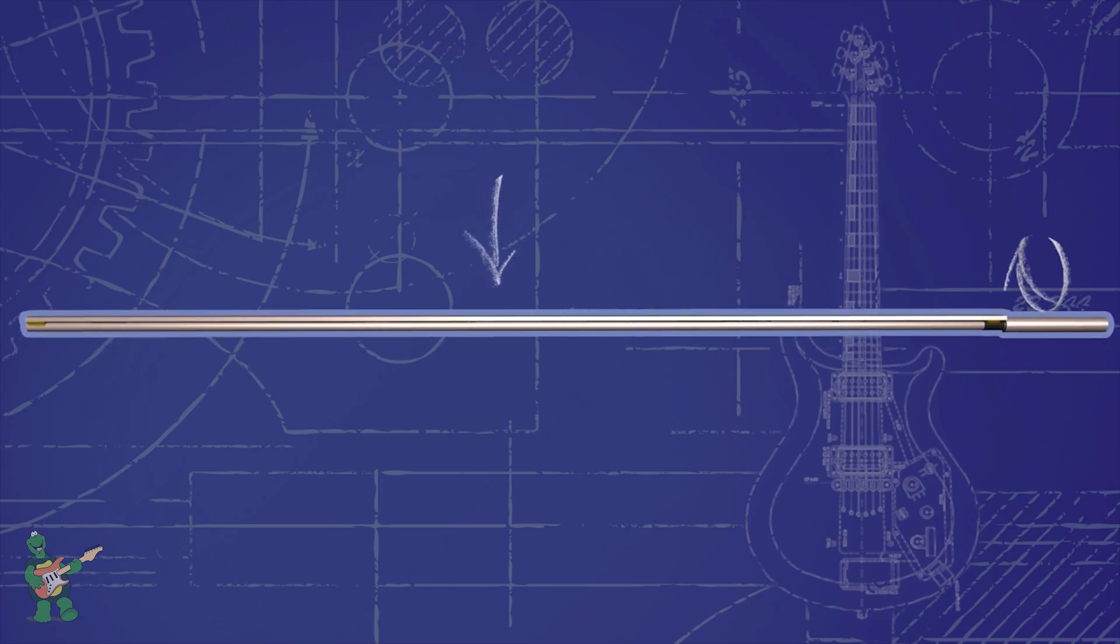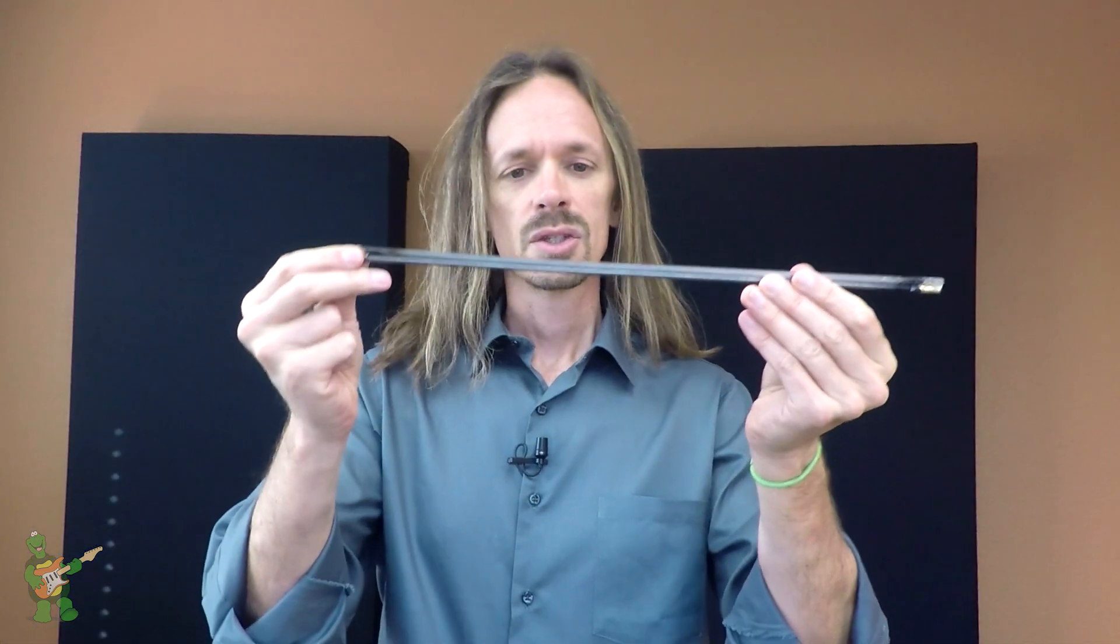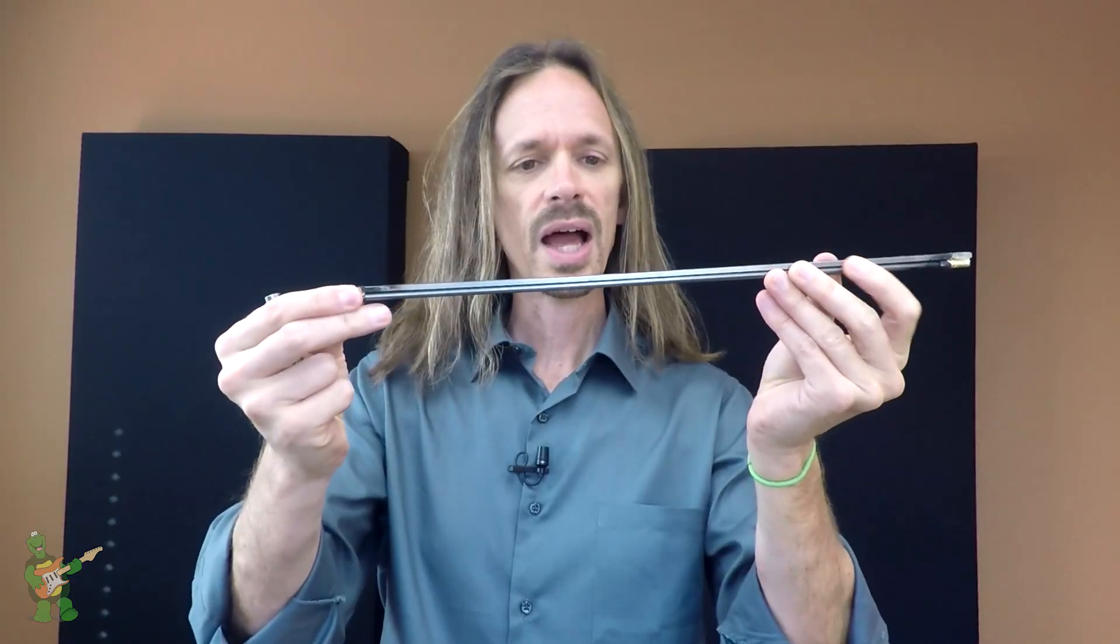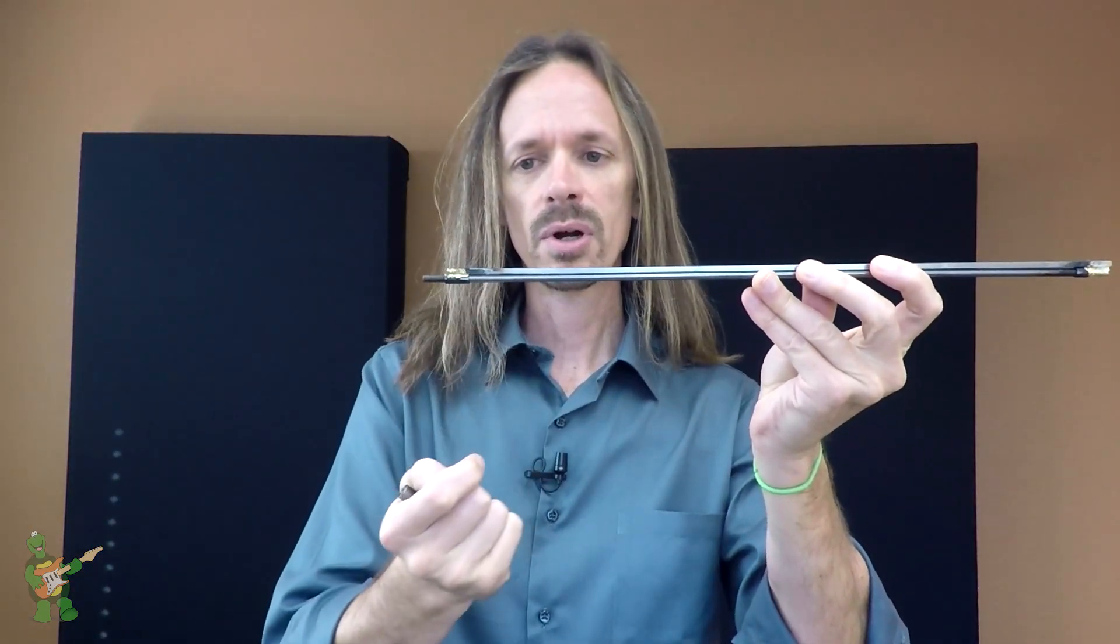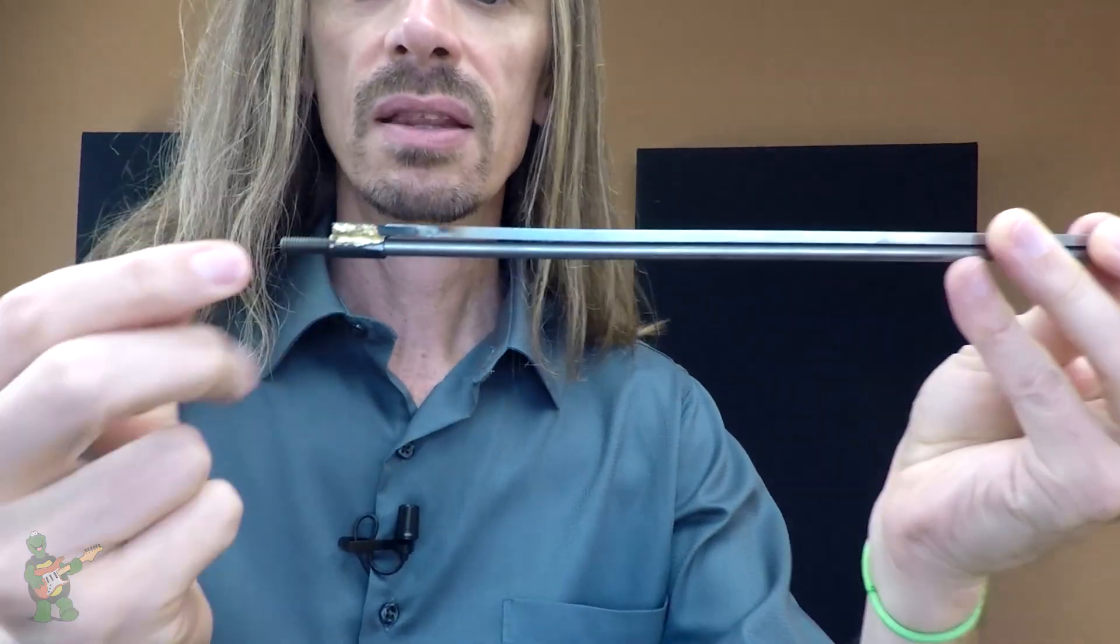So here is a double truss rod in real life, and you can see that we've got the flat bar and the round bar, and you can see that the round bar passes through this tube freely.